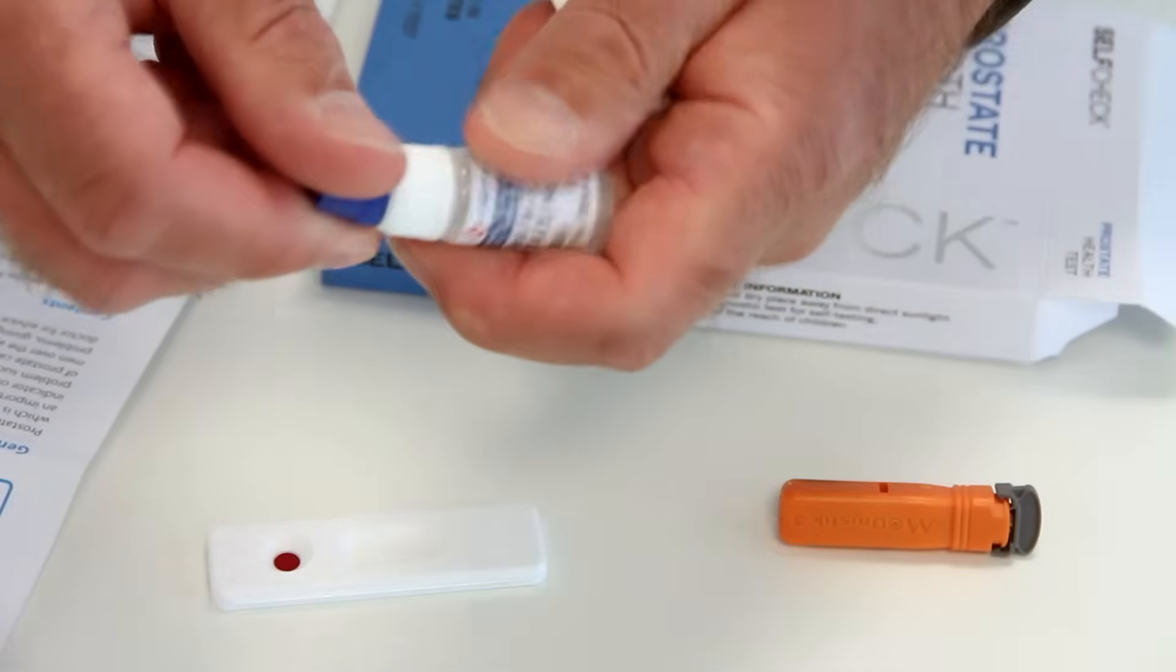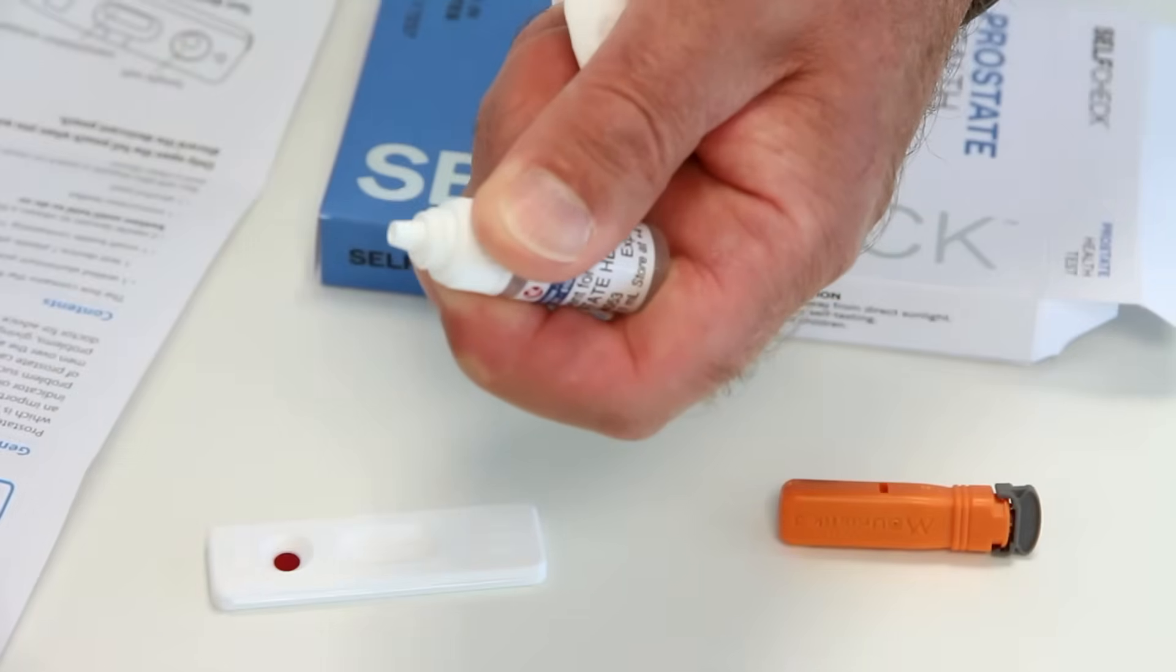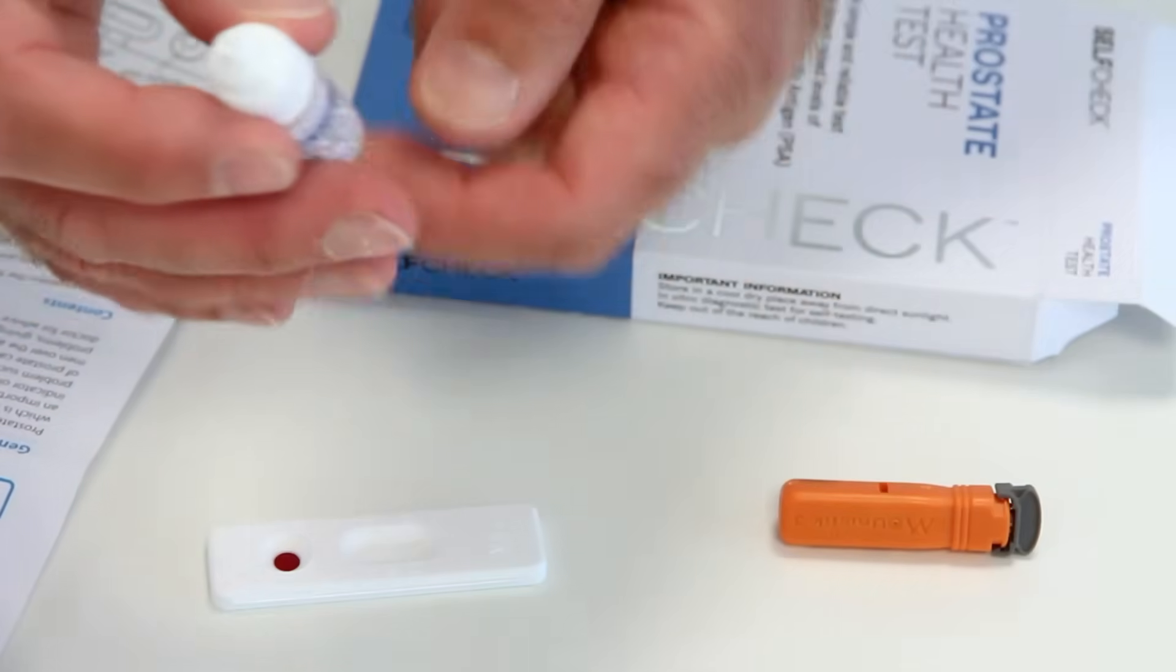Then unscrew the blue cap from the diluent bottle and add the required number of drops of diluent to the same well that you added the blood to.